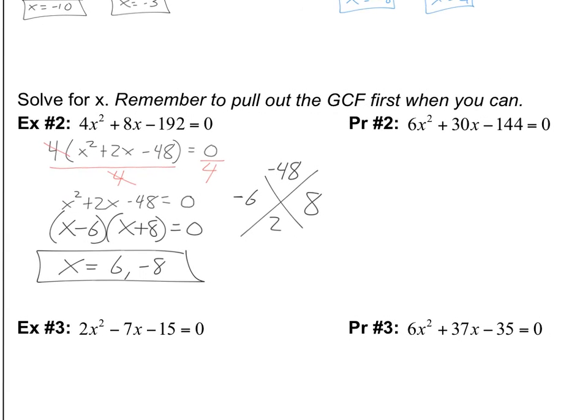Why don't you guys go ahead and do practice number 2, see what you can take out of both sides first, and then divide both sides by that number to simplify it.